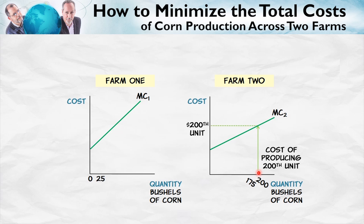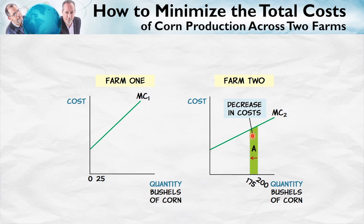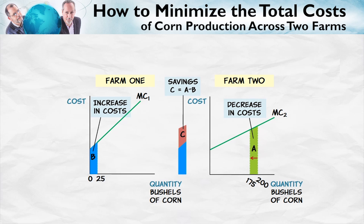Here's the cost of producing the 200th unit of corn. Now imagine that you produced all 200 units from farm two. Let's show a lower cost way of producing 200 units. Suppose you were to produce 25 fewer units on farm two — your costs would then fall by area A. Now, of course, you're producing 25 units less, so in order to make up for that decrease in production, you've got to produce 25 more units from farm one. Notice that in order to produce those 25 units on farm one, your costs go up by area B. Here's the key point: area A is bigger than area B. By switching production from the high marginal cost farm to the low marginal cost farm, you have decreased your costs by more than you have increased your costs — creating a savings of area C, the difference.